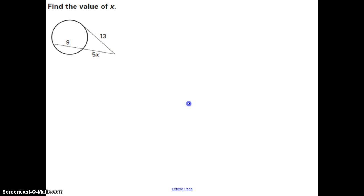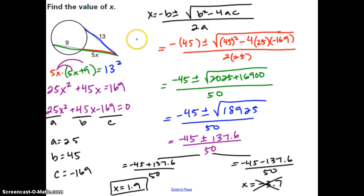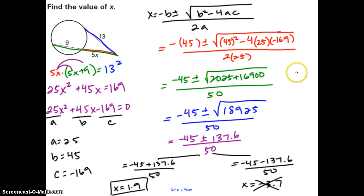Pause and try the next problem using the quadratic formula the same way. You should start with 5X times (5X plus 9) equals 13 squared. Distributing gives 25X squared plus 45X = 169. Subtract 169, assign A, B, C, plug into the quadratic formula, and simplify step by step. You'll get X equals 1.9 and X equals negative 3.7. Discard the negative answer, so X equals 1.9. If that's not what you got, check your work carefully.